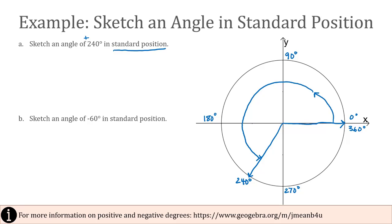Part B says to do the same thing. Sketch an angle in standard position. But notice this time that angle is negative. So the difference is, I'm going to start in the same location, but now I'm going to go clockwise. So I'm going to go this direction.